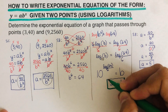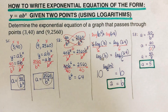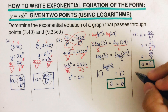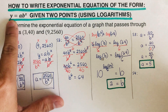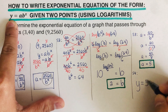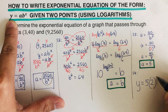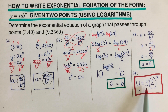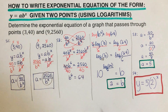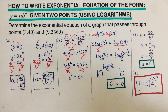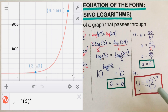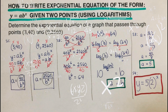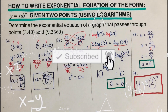Step 4 is to set up the final equation. With a equals 5 and b equals 2, the equation is y equals 5 times 2 raised to the power x. This means if you sketch the graph of y equals 5 times 2 to the x, it passes through the points (3, 40) and (9, 2560), as confirmed in the graph shown. If you found this video helpful, hit like and subscribe for more math videos.